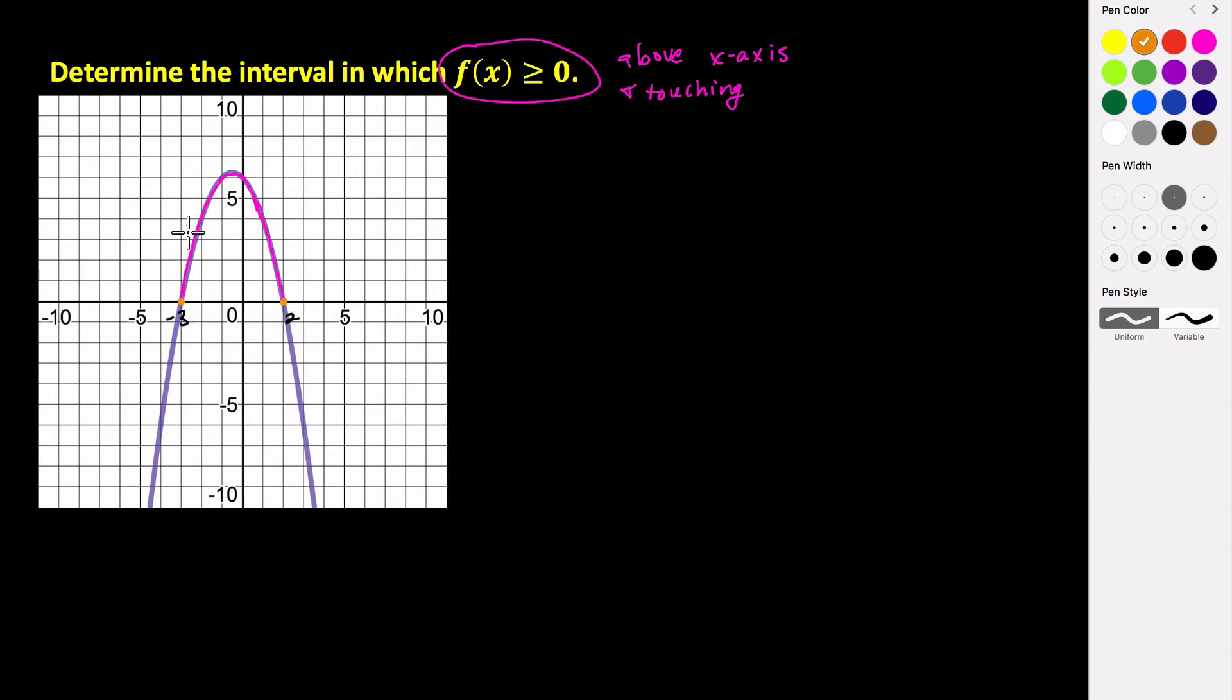But for what values of x is our graph above the x-axis? Well you can see that it's going to happen for all of our x values in between negative 3 and 2.